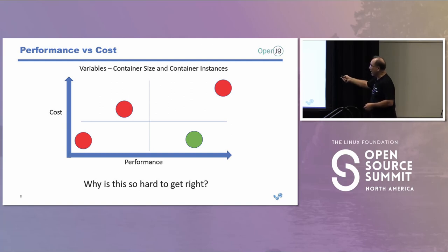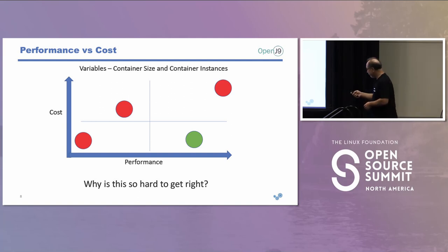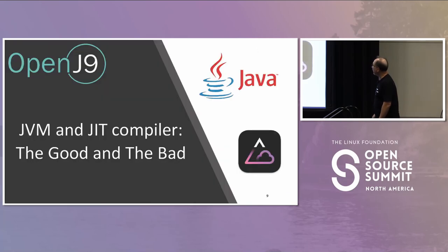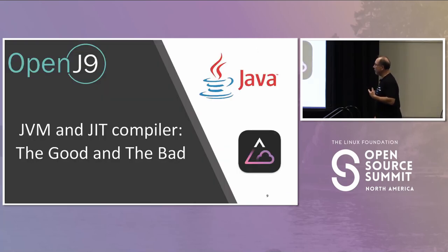There's a sweet spot that's very hard to find, and a lot of companies are putting a lot of effort into figuring out a Java solution for it. That's why we're going to get into the JVM and the JIT compiler — the good and the bad — and the reasons behind why it's so hard.